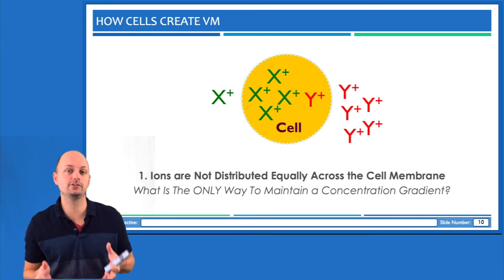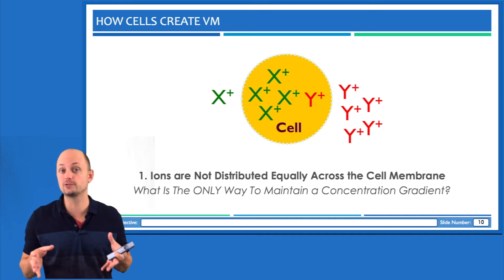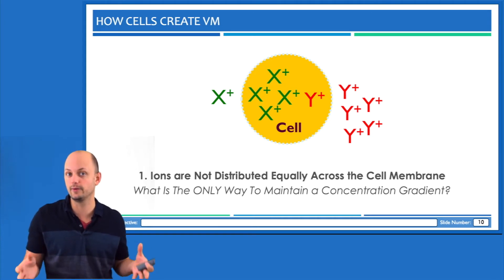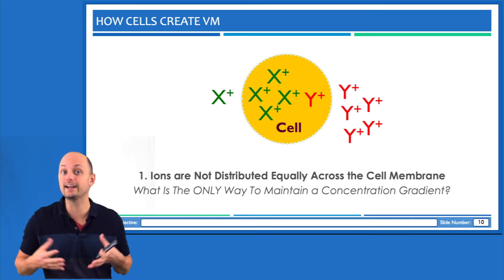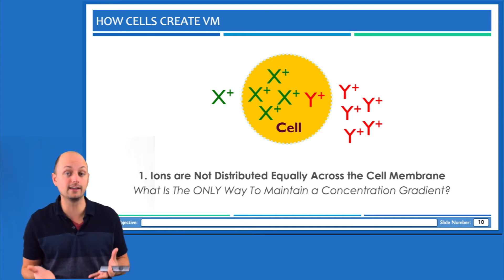The first reason that membrane potential exists is because the plasma membrane is able to create compartmentalization. This allows us to have different concentrations of ions or charged particles on either side of the membrane. The inside environment of the cell is different than the extracellular environment. To plug in a familiar term from the last unit, we could say that a concentration gradient exists for ions.